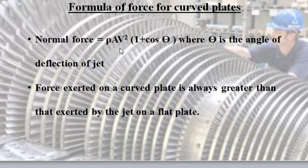Now if we discuss problems for the case of curved plates, then we would find that the normal force which is exerted by the jet on the curved plate would be ρAV²(1+cosθ). Now in the earlier case for flat plates we were getting only ρAV². But now here we are getting an additional term which is being multiplied, that is (1+cosθ). And we see that (1+cosθ) is always greater than 1, hence this entire expression would be definitely greater than ρAV². So the force which is exerted on a curved plate is always greater than that which is exerted by the jet in case of a flat plate.